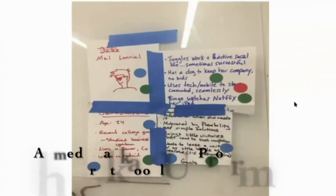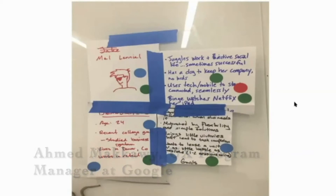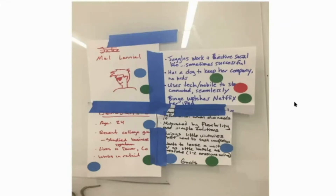And then you play Frankenstein, right? The ones with the quadrants with the top votes kind of get Frankensteined together. In this case, we have Mel Millennial and his demographic, and some of the juggling — you can see in the top right corner — they're juggling work and social life and just trying to binge watch Netflix. It can be a fun activity as well because you really get to be creative and human with how you're describing your customer.